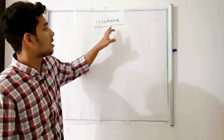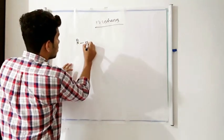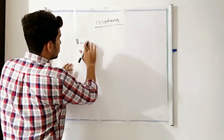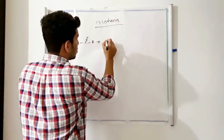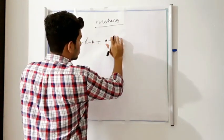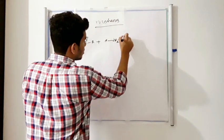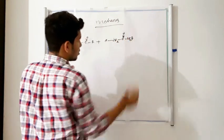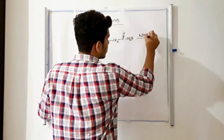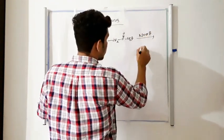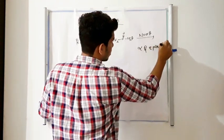Next, we are going to discuss the mechanism for the Darzen reaction. A ketone reacts with an alpha-halogenated ester in the presence of NaOH to form an alpha-beta epoxide ester.